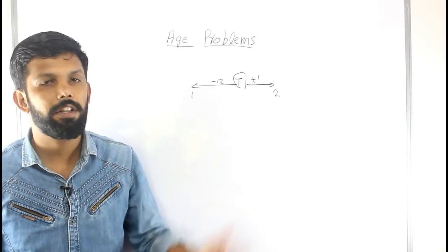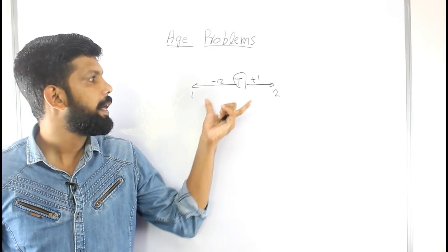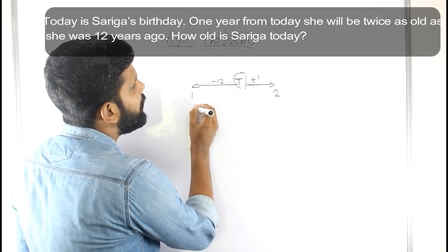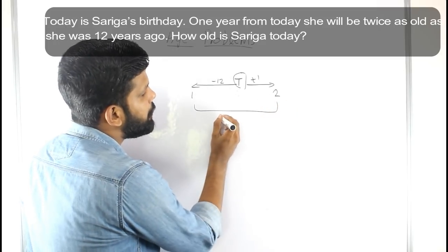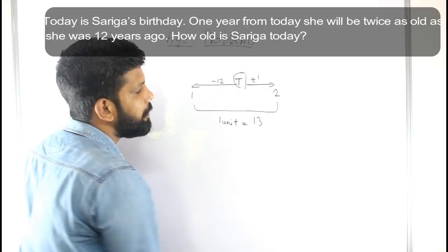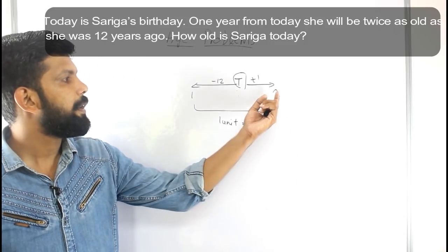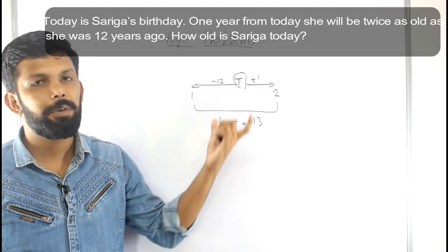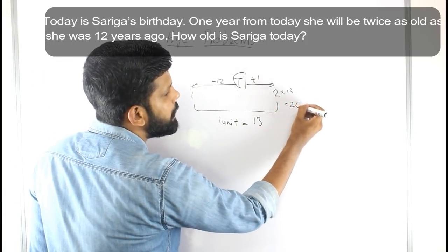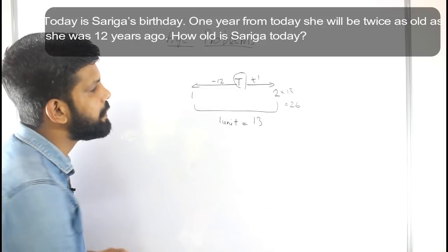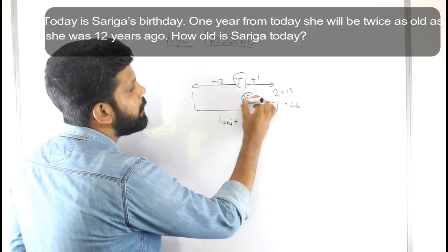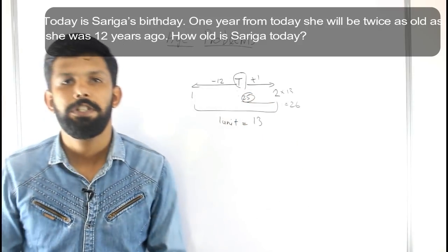We have a gap of 12 plus 1 equals 13 years between the two reference points. In a 1 is to 2 ratio, the difference between units is 1 unit, and 1 unit equals 13. So 2 units equals 2 into 13, which is 26. Adjusting for the present age, the answer for this question is 25.